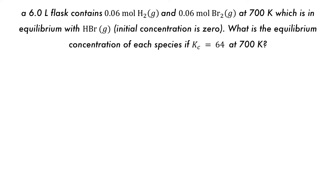In this question, we're being asked to solve for the equilibrium concentrations of each species. A flask of 6 liters contains 0.06 moles of H2 and 0.06 moles of Br2 at 700 Kelvin, which is in equilibrium with HBr, whose initial concentration is 0. We're not given the balanced equation, so we need to form that first. H2 plus Br2 is in equilibrium with HBr.